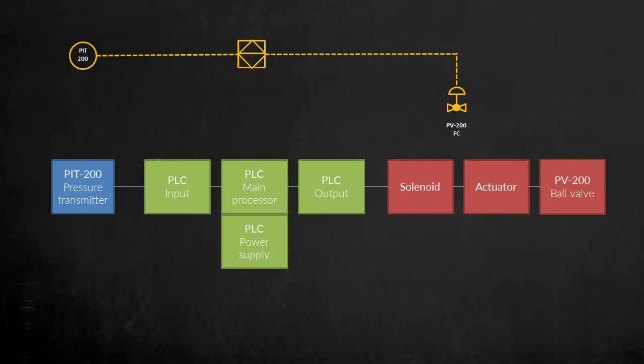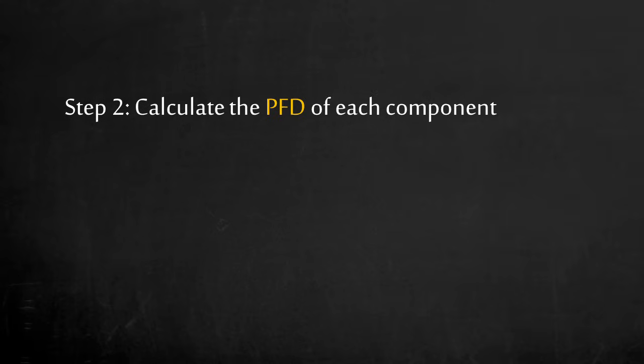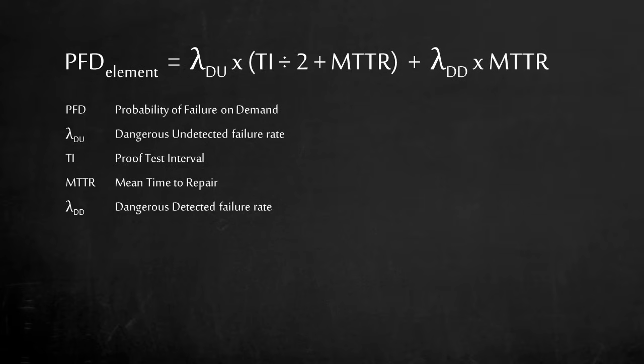We can break down this SIF into the pressure transmitter, programmable logic controller, and final element. Step 2. To determine the reliability of our safety instrumented function, we need to calculate the PFD of each component. With a simple equation, the probability of failure on demand of each element can be determined.